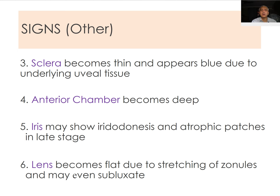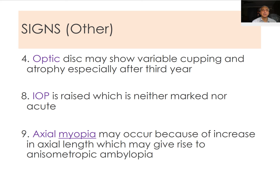When the eyeball stretches anteroposteriorly and vertically, the root of the iris enlarges and the ciliary body stretches outwards, causing the zonules to stretch and eventually break, leading to iridodonesis. The lens becomes flat because of this and may even subluxate, so these patients can be myopic with subluxated lenses and iridodonesis.